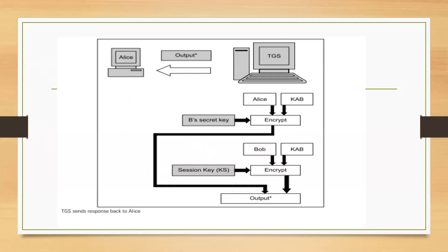After the TGS receives Alice's request, it sends back two packets as a reply. The first packet contains Alice's ID and the session key KAB encrypted using Bob's secret key — so only Bob can decrypt it. The second packet contains Bob's ID and the session key KAB encrypted using the session key itself, which is only known to Alice's machine and Bob's machine.